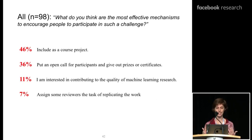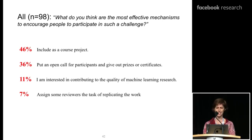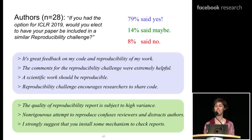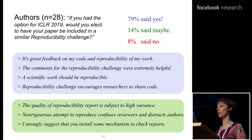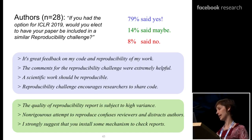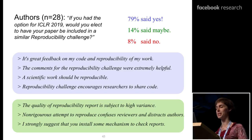We asked all participants what are the most effective mechanisms to encourage reproducibility. 46% said include it as a course project; 36% said put out an open call with prizes and certificates; 7% said assign some reviewers the task of replicating the work. Finally, 79% of authors said that if given the option in ICLR 2019, they would elect to have their paper included in the challenge, with many comments saying scientific work should be reproducible. A few pointed out that reports are subject to high variance, as is the reviewing process.